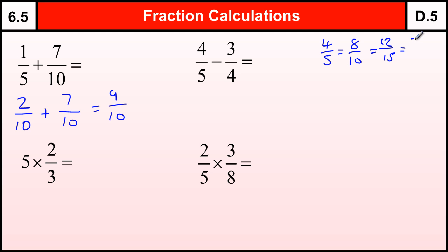And quite often this is really just a test of your times table skills. So four-fifths doubled is eight-tenths. If I times the top and bottom by three I get twelve over fifteen. Times by four I get sixteen over twenty.